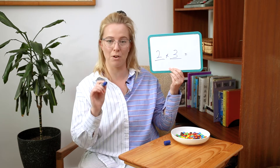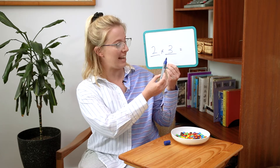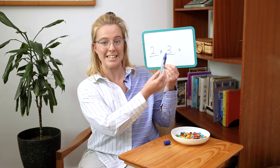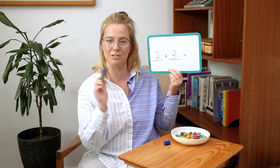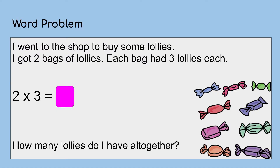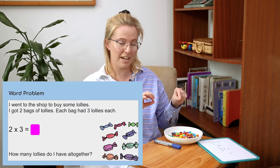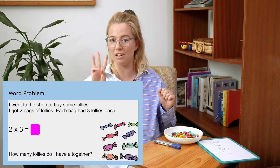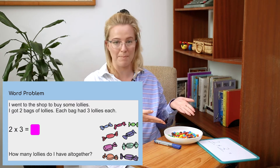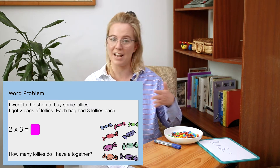With that word problem I wrote it down as an equation. I have two bags of lollies and in each bag there are three lollies each. So to solve this equation I'm going to use these very delicious materials right here. I'm going to take these materials into two groups and in each group I'm going to put three M&Ms, and then we can add them together to see how many we have as a total.